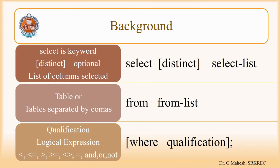We have already seen the simple syntax for SELECT command: SELECT DISTINCT, SELECTION LIST FROM FROM LIST WHERE qualification. The FROM LIST includes the table names, SELECTION LIST includes column names, and the WHERE clause includes the condition for filtering different rows.